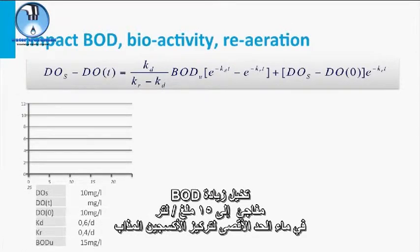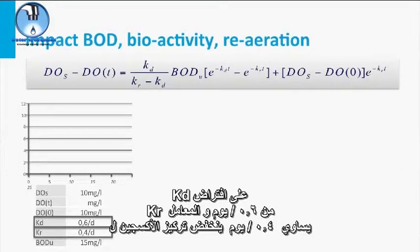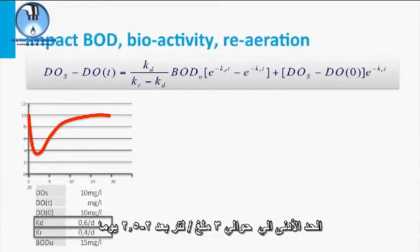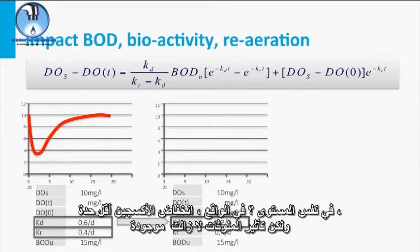Now imagine a sudden BOD increase to 15 mg per liter in water with a maximum dissolved oxygen concentration of 10 mg per liter. Assuming a Kd of 0.6 per day and a Kr of 0.4 per day, the oxygen concentration drops to a minimum of about 3 mg per liter after 2 to 2.5 days. What happens with the shape of the curve when we lower the Kd value, keeping the Kr at the same level? Indeed, the drop in oxygen is less severe, but the impact of the pollutant is present for longer.